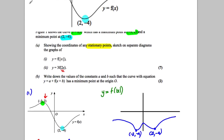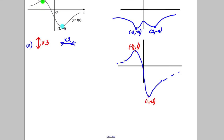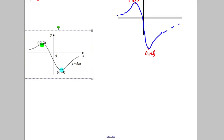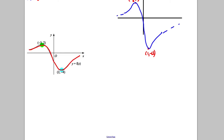So it's going to look something like going up to a maximum and then coming back like that. Next, write down the values of constants A and B such that a curve with this equation has a minimum point at the origin. So let's think about this. There's our graph. The question is how would you get this to have its minimum point at the origin?